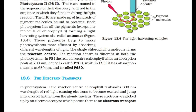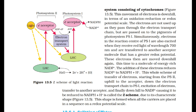In photosystem-2, the reaction center chlorophyll absorbs 680 nm wavelength of red light, causing electrons to become excited and jump into an orbit farther from the atomic nucleus. These electrons are picked up by an electron acceptor which passes them to an electron transport system consisting of cytochromes. This movement of electrons is downhill in terms of an oxidation-reduction or redox potential scale. The electrons are passed on to the pigments of photosystem PS1.